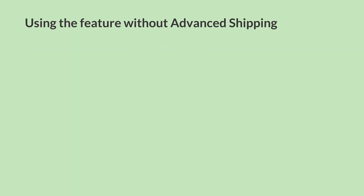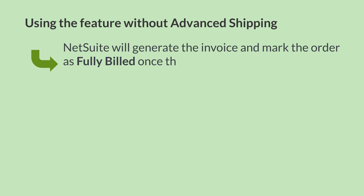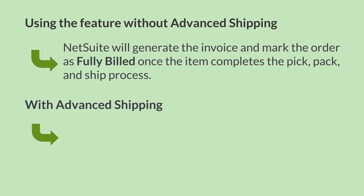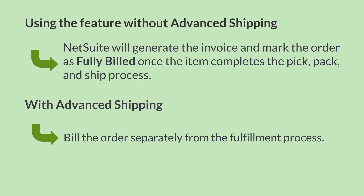If you use this feature without the Advanced Shipping feature, then once an item has gone through the Pick, Pack, Ship process, NetSuite will generate the invoice and mark the order as fully billed. With Advanced Shipping, on the other hand, you will be able to bill the order separately from the fulfillment process.